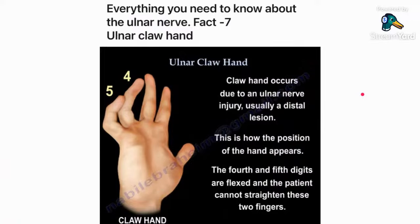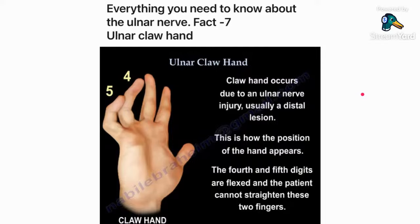Fact number seven: clawing of the hand. If you have a low ulnar nerve lesion — meaning below the elbow — you will get clawing of the hand. With a high ulnar nerve injury, you get loss of sensation in the dorsal medial hand but may not get clawing. With a low ulnar nerve lesion, you will get clawing but will not get loss of sensation in the dorsal ulnar hand.